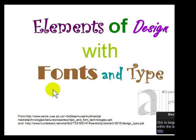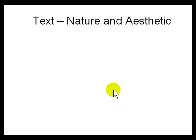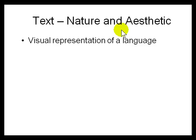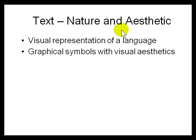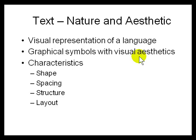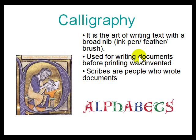This lecture is a continuation of typesetting. The major part of typesetting today is fonts. Text has two things: the nature and aesthetics — the visual presentation of language — and graphical symbols with visual aesthetics. The characteristics of a text include the shape, spacing, structure, and layout, which we will look at in detail.